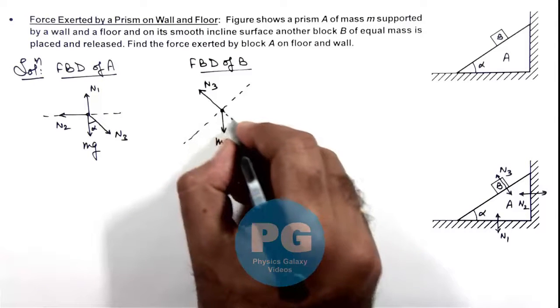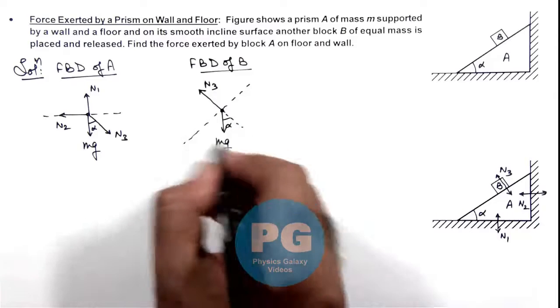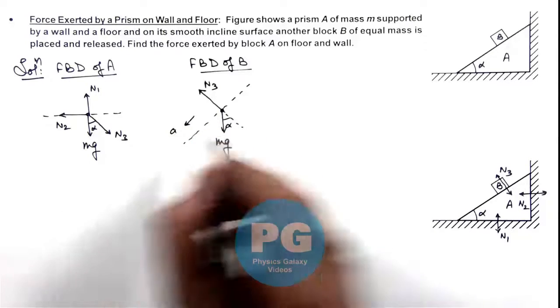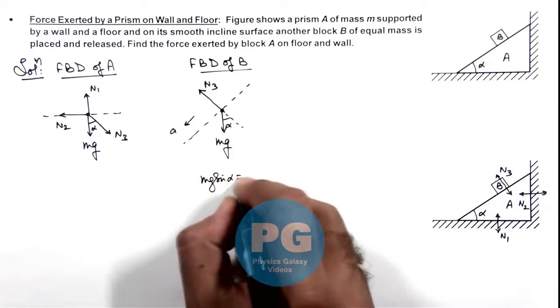So in this situation this angle is alpha here. So this is sliding due to mg sine alpha with an acceleration a. So for this we can simply write mg sine alpha is equal to ma.